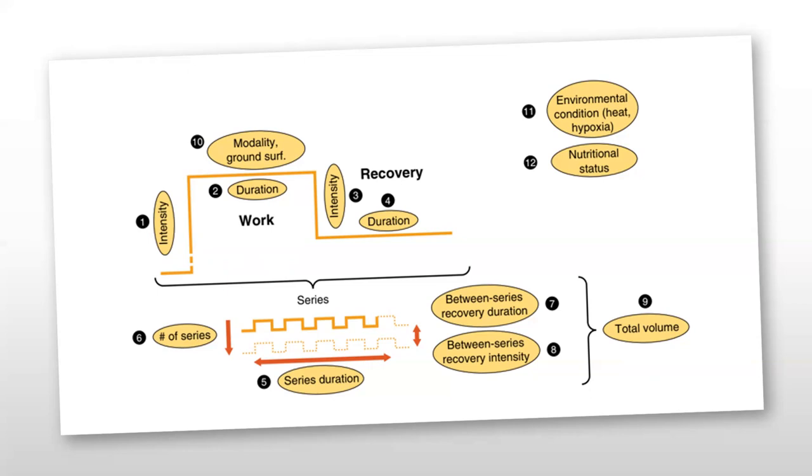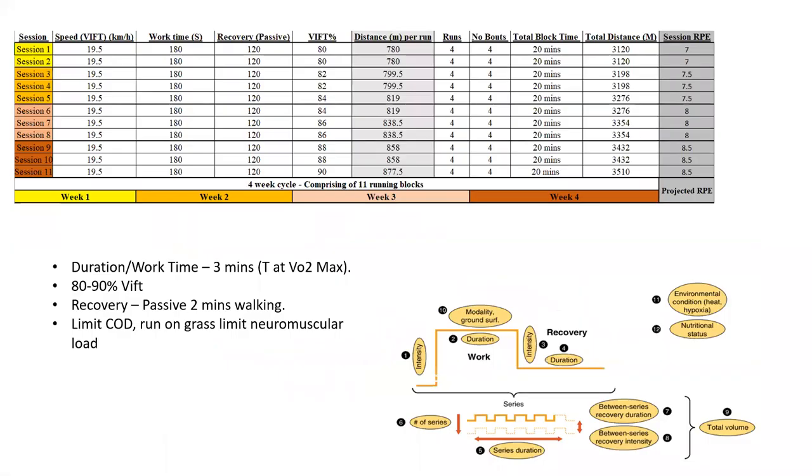Then we have 11 and 12: environmental conditions like is it hot, are we running at altitude, and nutritional status as well. I'm really going to focus on probably about one to 10. The 11 and 12 are not as much of a focus, even though nutrition should be. I want you to touch base with your nutritionist or Martin on that one.